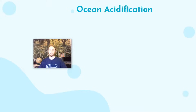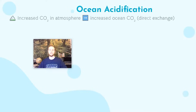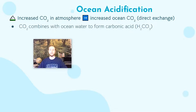We'll start out today by talking about some of the basics of ocean acidification. First we have to know that this comes primarily from increased atmospheric CO2 levels. Carbon dioxide levels in the atmosphere are going to influence levels in the ocean via direct exchange — CO2 gas molecules can dissolve directly into the ocean from the atmosphere and vice versa. When CO2 molecules dissolve into the ocean, they combine with ocean water to form carbonic acid.